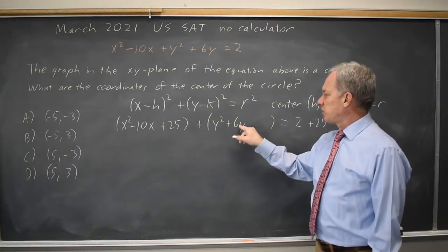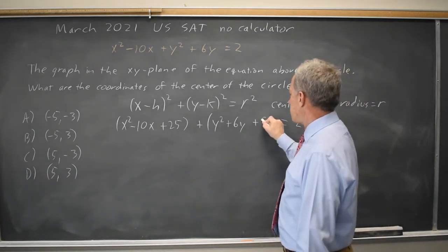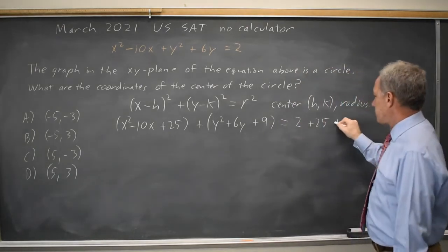Similarly, half of the linear coefficient, half of 6 is 3, 3² is 9, so I'll add 9 on the left and I'll add 9 on the right.